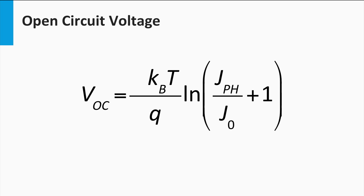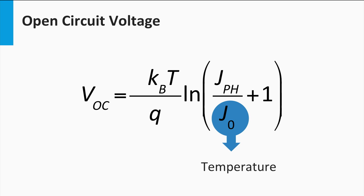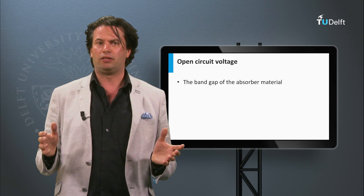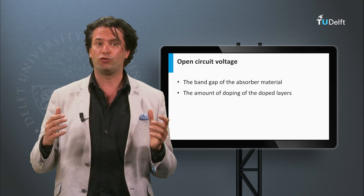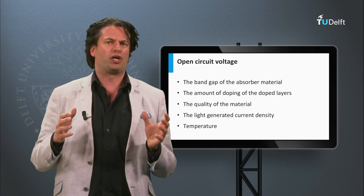The equation shows that the open circuit voltage depends on several parameters. First, if the photocurrent density is increased, the open circuit voltage increases as well — meaning that by increasing the irradiance, or shining more light on the solar cell, the open circuit voltage can be increased. Secondly, the open circuit voltage depends on temperature. Although the equation might suggest it increases with temperature, this is not the case: the leakage current J0 strongly increases with temperature, so higher temperature leads to a larger leakage current and a smaller open circuit voltage. The open circuit voltage also depends on the band gap of the absorber material, the doping level of the doped layers, and the quality of the material, or in other words, the defect density.